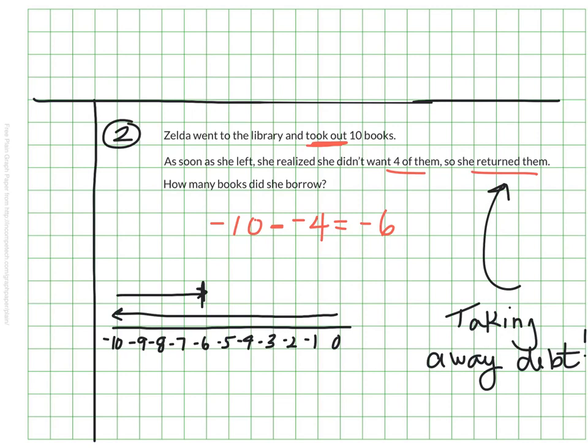And it's funny to think about it with books. It makes a bit more sense with money. But I just wanted to do these kind of friendly numbers here to show you that. But this would work just as well with money. If Zelda owed $10 to someone and then she took away $4 of her debt, she's now only in debt $6.